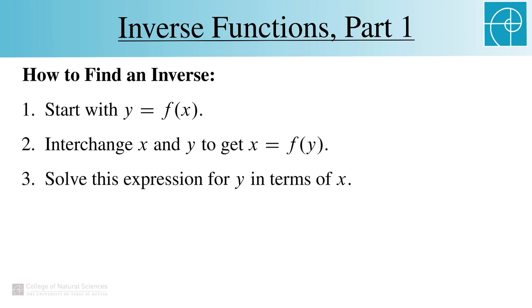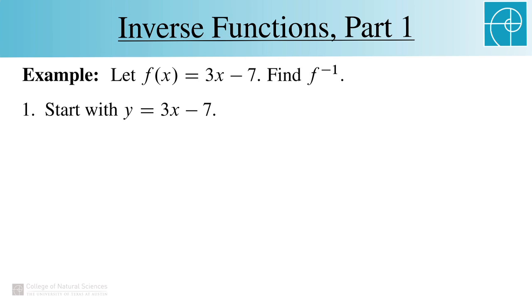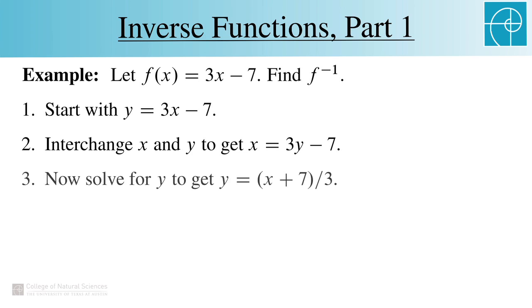Let's look at an example involving one of the functions that we've already seen. So with f of x equal to 3x minus 7, we start with y equals 3x minus 7, then interchange x and y to get x equals 3y minus 7, and finally solve for y in the previous equation to get y equals the quantity x plus 7 over 3, which gives us f inverse.